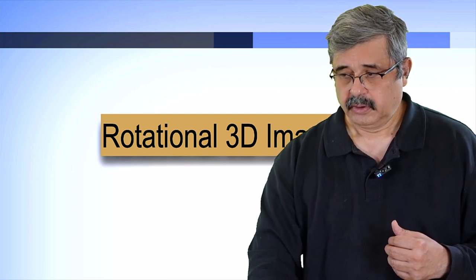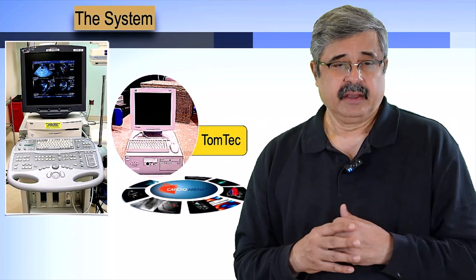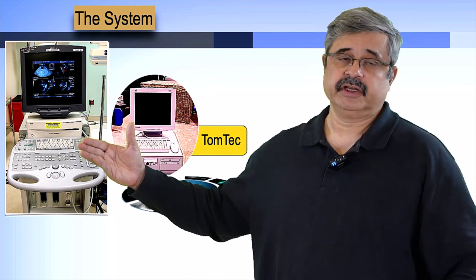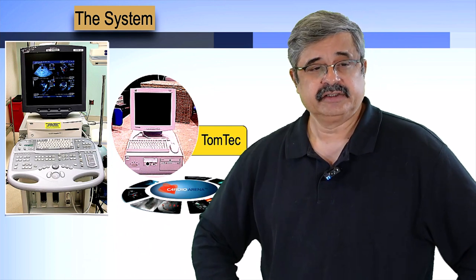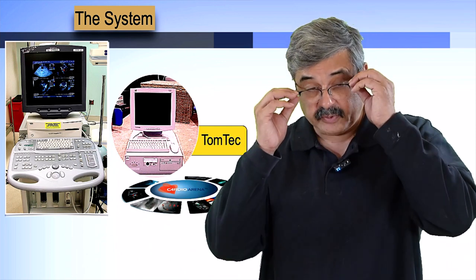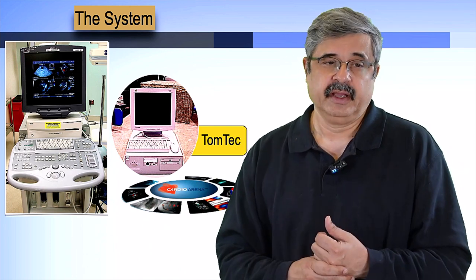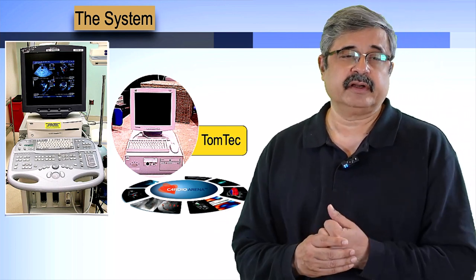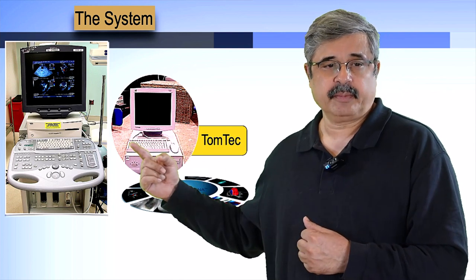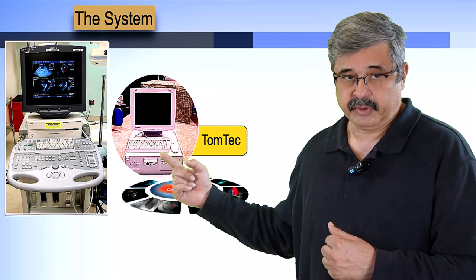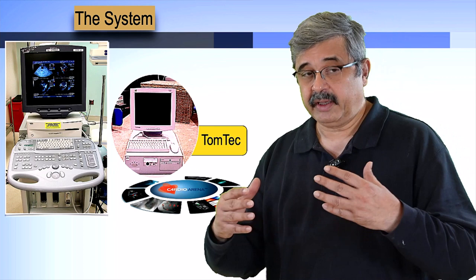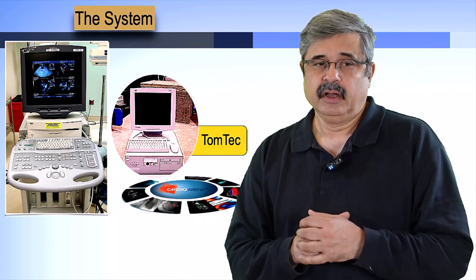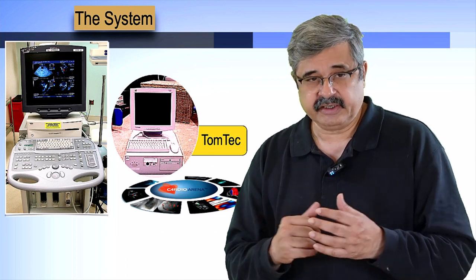This was the system most commonly used for rotational three-dimensional imaging: the Siemens Sequoia C512. In its own right, it was a phenomenal 2D system. It had a V6M probe capable of two-dimensional imaging but was not capable of rotational three-dimensional imaging unless coupled with a TomTec computer. This TomTec computer could be incorporated in any two-dimensional system but was most compatible with the Siemens Sequoia C512.